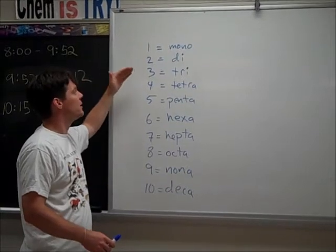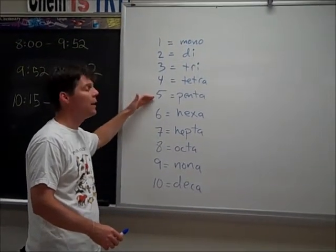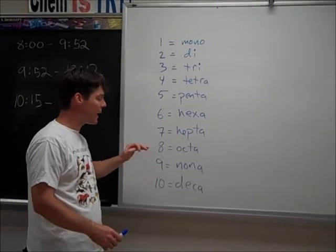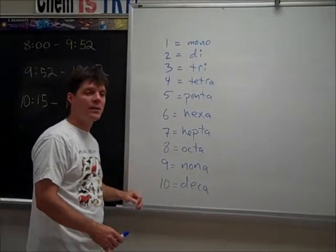One is mono, two is di, three is tri, four is tetra, five is penta, six is hexa, seven is hepta, octa for eight, nona for nine, deca for ten.